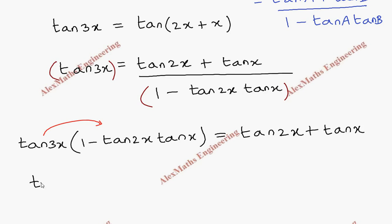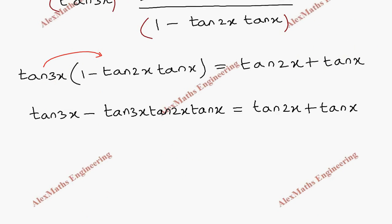Let's multiply tan(3x) with both terms. So tan(3x) times 1, which is tan(3x), minus tan(3x)tan(2x)tan(x), which is equal to tan(2x) plus tan(x).